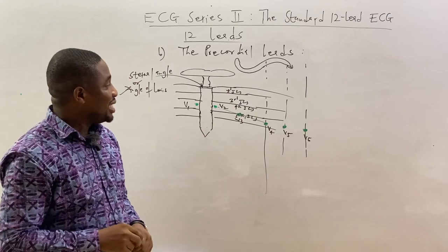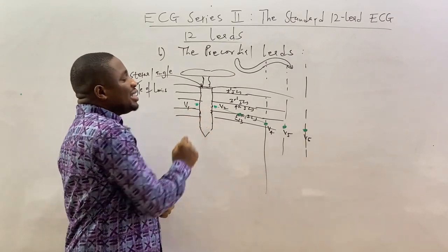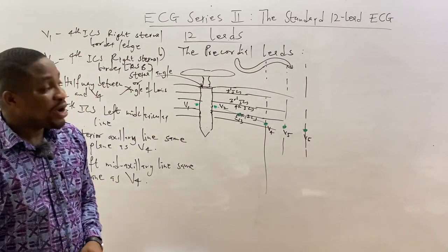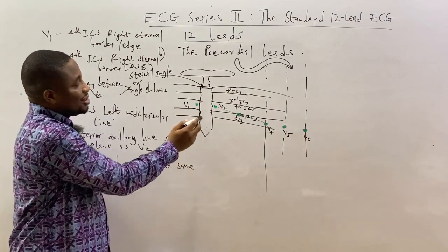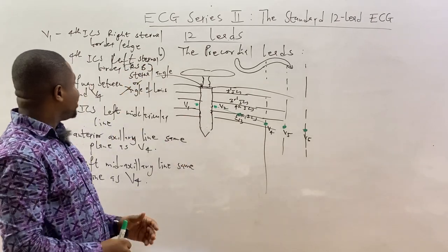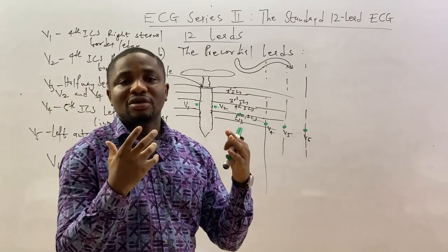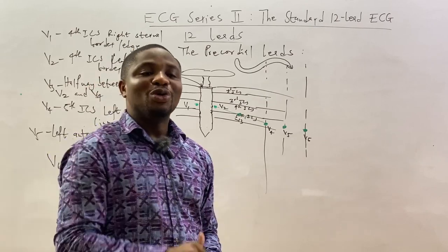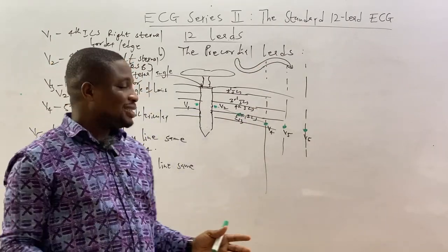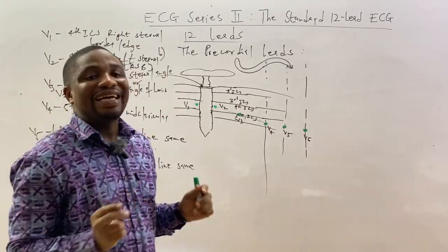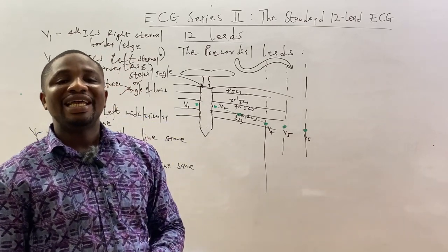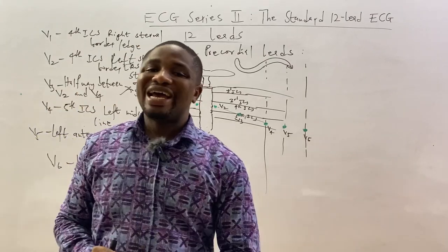V1 is placed in the fourth intercostal space, right sternal border. V2 is placed in the fourth intercostal space, left sternal border. For V3, you must first place V4. V4 is placed in the fifth intercostal space, left mid-clavicular line. V3 is then placed halfway between V2 and V4 along the imaginary line connecting them.